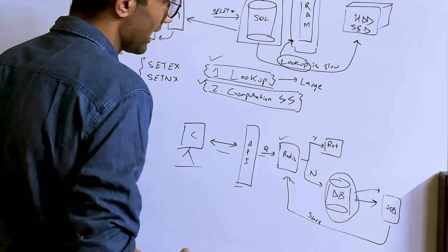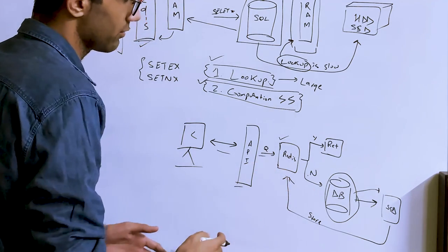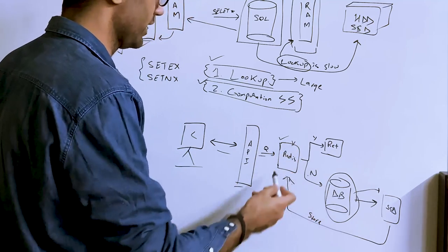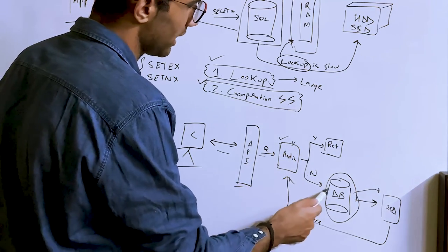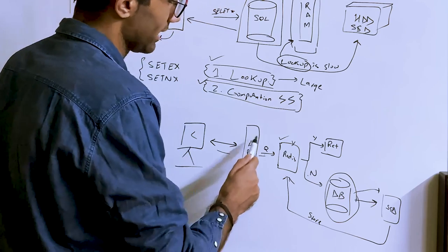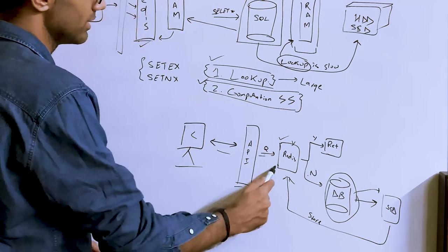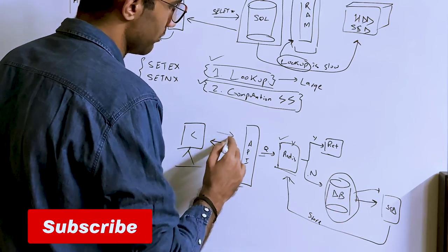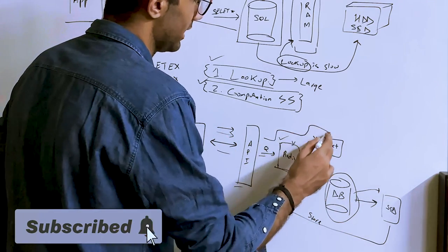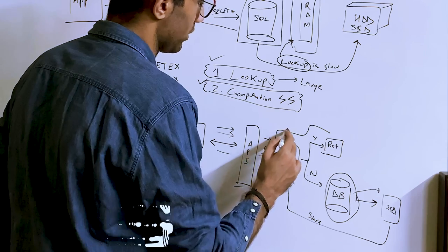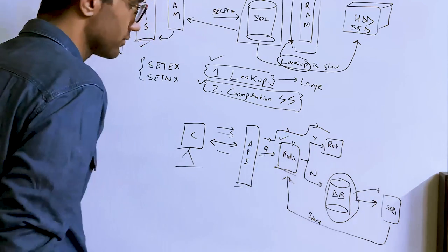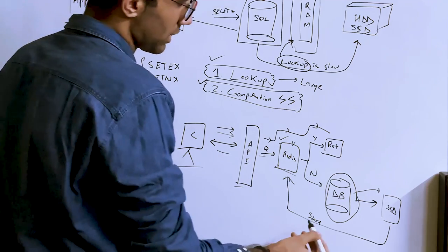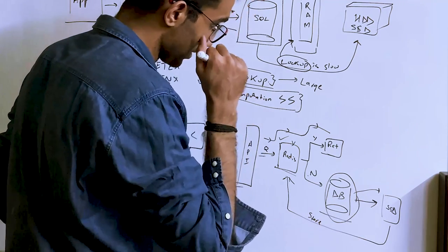Redis in this case acts more as a query booster than a critical system. If Redis fails to store a query or forgets, you always hit the database branch and transparently get the result. But once a query is cached, the next million hits might just hit the cache route, which is potentially 2–3x faster depending on query complexity.